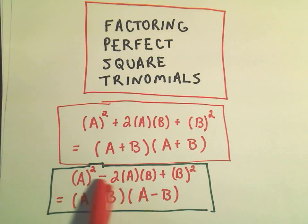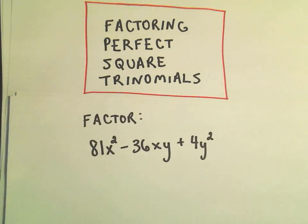If you multiply out the factored form, you'll see you get this right back. In this video I'm going to factor 81x² - 36xy + 4y².